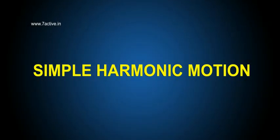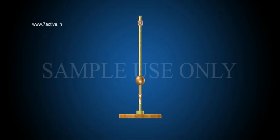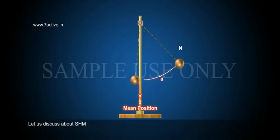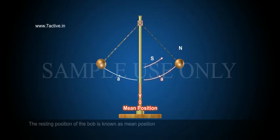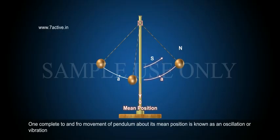Simple Harmonic Motion. Let us discuss about SHM. Observe this simple pendulum. The resting position of the bob is known as mean position. One complete to and fro movement of pendulum about its mean position is known as an oscillation or vibration.